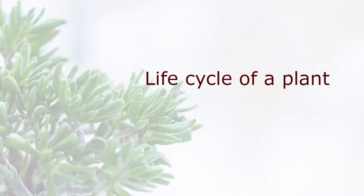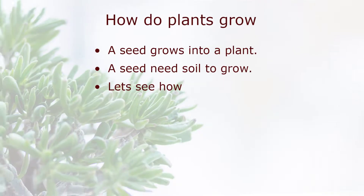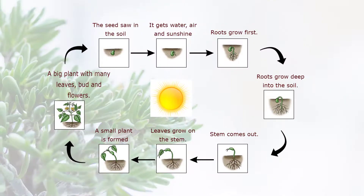Life cycle of a plant. How do plants grow? A seed grows into a plant. A seed needs soil to grow. The seed is sown in the soil. It gets water, air, and sunshine. Roots grow first, deep into the soil. Then the stem comes out. Leaves grow on the stem. A small plant is formed. The small plant grows into a big plant with many leaves, buds, and flowers.